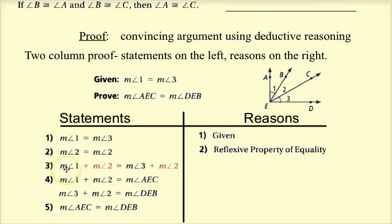Now let's look at step three. Eventually, you are actually writing these statements. They're not going to be written for you, but we're doing it this way to get used to them. The measure of angle one plus the measure of angle two equals the measure of angle three plus the measure of angle two.